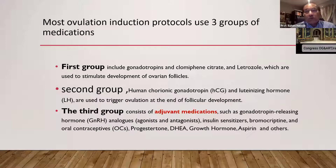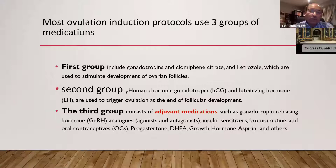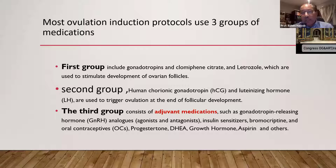Both ovulation induction protocols use three groups of medication. The first group includes gonadotrophins, clomiphene citrate, and letrozole, which are used to stimulate development of ovarian follicles — bringing the follicle from prophase I to metaphase I. The second group is LH hormone used for triggering ovulation at the end of follicular development. The third group is adjuvant medication: GnRH analogs, antagonists, and other medications such as bromocriptine, oral contraception, progesterone, DHEA, and growth hormone.